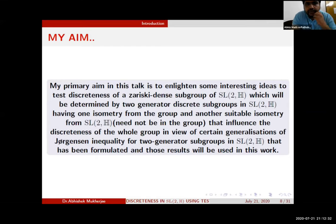My primary aim in this talk is to give some ideas to test discreteness of a Zariski-dense subgroup, which will be determined by two-generator discrete subgroups in SL(2,H) having one isometry from the group and another one we can choose suitably and may not be in the group that we have considered. This two-generator subgroup will influence the discreteness of the whole group in view of certain generalizations of Jørgensen inequality for two-generator subgroups in SL(2,H).